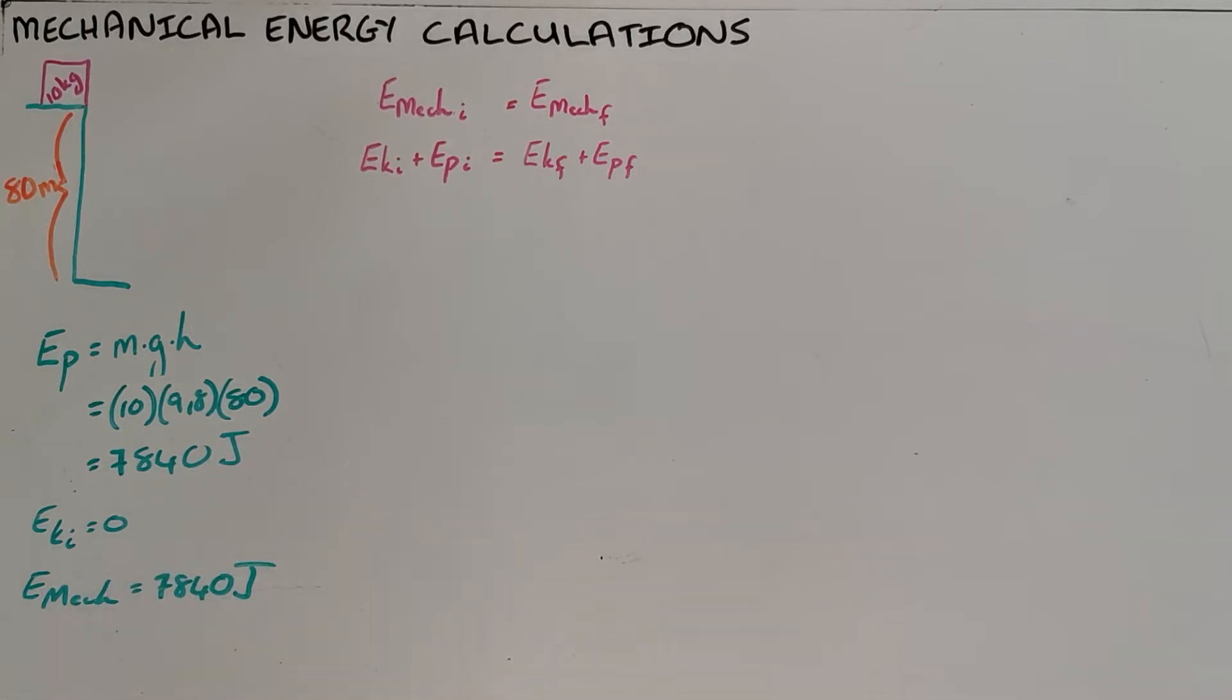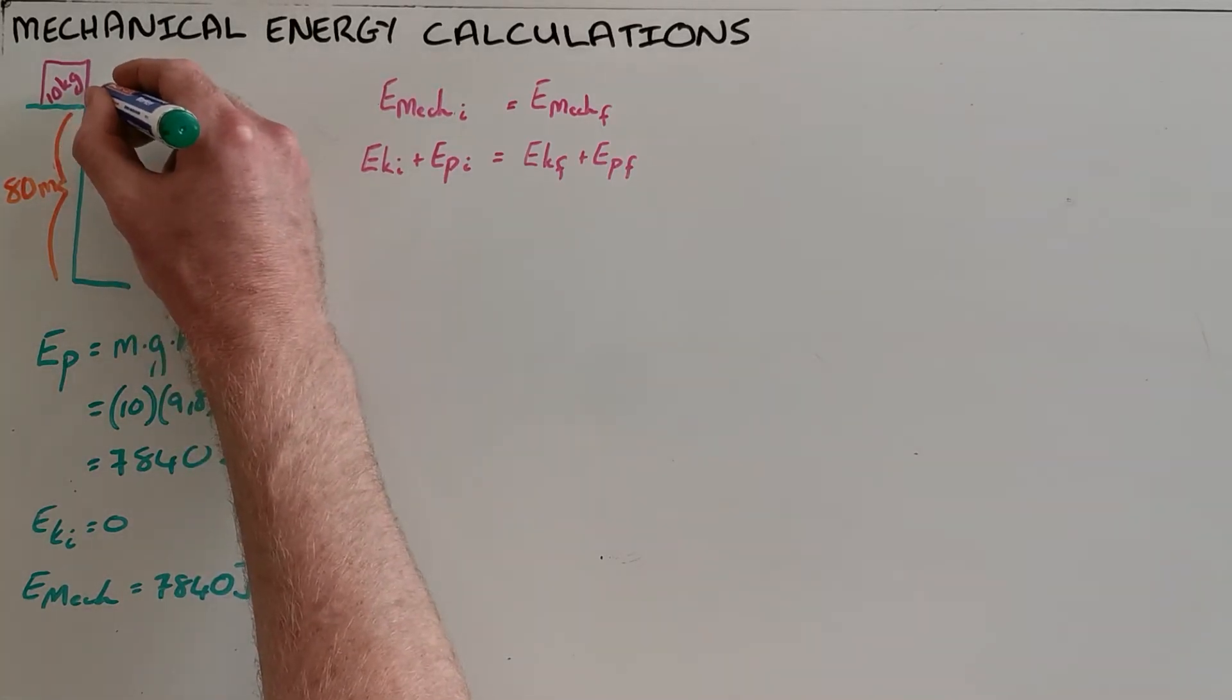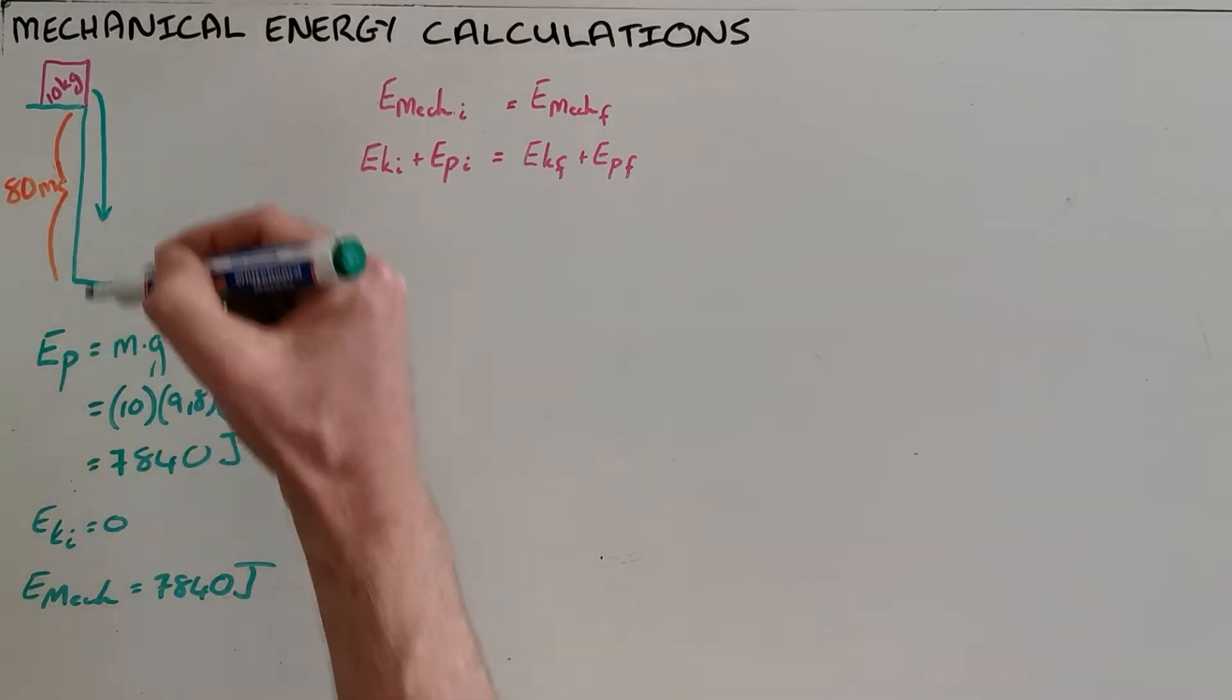Most of these questions state that there is no friction or air resistance, and as a result this object maintains that mechanical energy throughout its motion. In this case the object is dropped or is falling down that 80 meter incline, but it can also happen on a frictionless roller coaster or rolling down a slope. Either way, if there is no friction the mechanical energy remains the same.